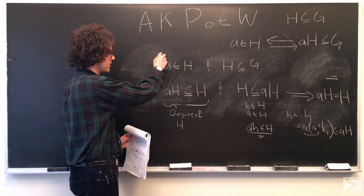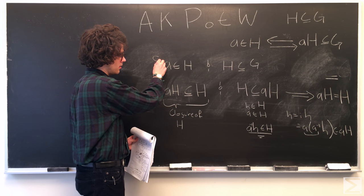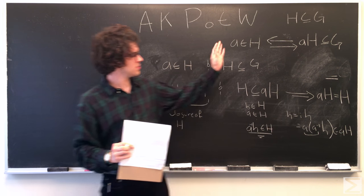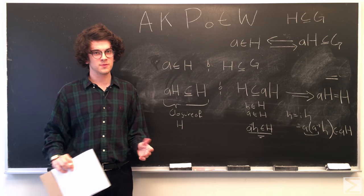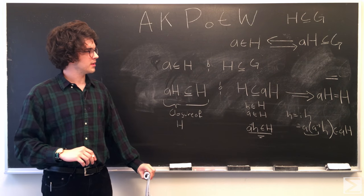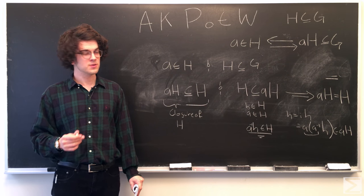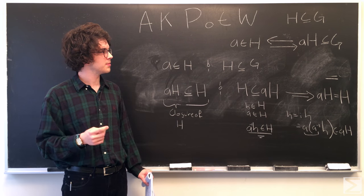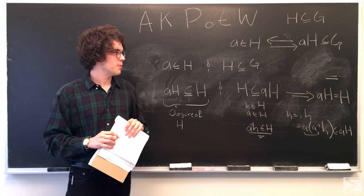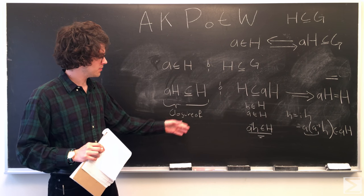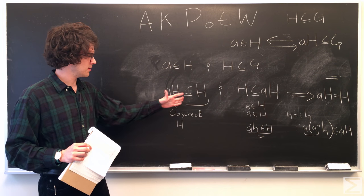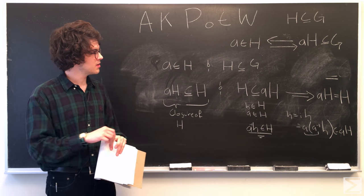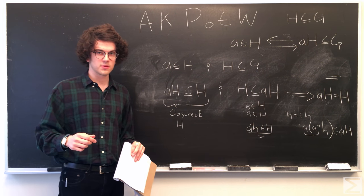So this way is kind of trivial. The first thing you read about cosets is that if A is an element of H, then A-H is a subgroup of G. But it's important to go through and prove it just given the properties of subgroups. So now we're going to prove the backwards way.